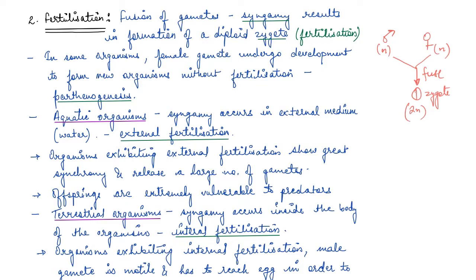Now let's see where syngamy occurs — where exactly the fusion of gametes takes place. In most aquatic organisms, such as algae, fishes, and amphibians, syngamy occurs in water — in an external medium. If fertilization is outside the body of the organism, as in aquatic organisms, it is known as external fertilization.